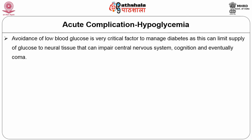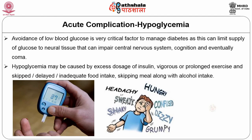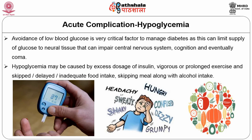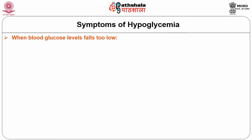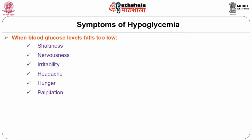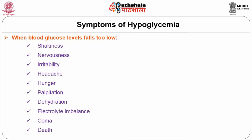The brain can only utilize glucose — without it, cognition is impaired and eventually coma occurs. Hypoglycemia accounts for almost 4% of deaths and may be caused by excess insulin dosage, vigorous exercise, skipping meals, or inadequate food. Symptoms include shakiness, nervousness, irritability, hunger, palpitation, and dehydration. Immediate ingestion of glucose, candy, juice, or chocolate can help.